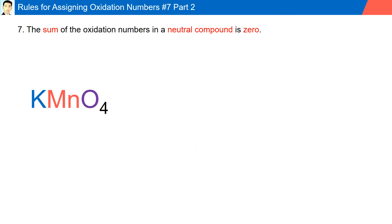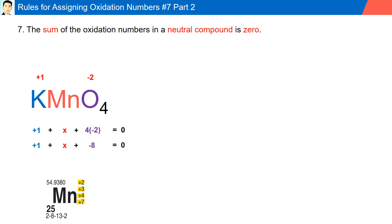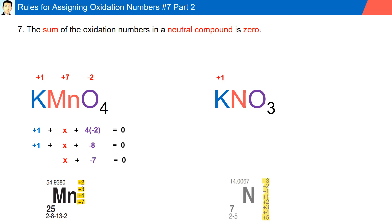Rule number seven continues: the oxidation number in neutral compounds is zero. For KMnO4, K has a plus one charge since it's in group one, but Mn has multiple oxidation states. Oxygen is always minus two; here we have four oxygens. Solving, the oxidation state for Mn is plus seven. For KNO3, K has a plus one charge, nitrogen has multiple oxidation states, and three oxygens give a minus six total, resulting in nitrogen having a plus five oxidation state.